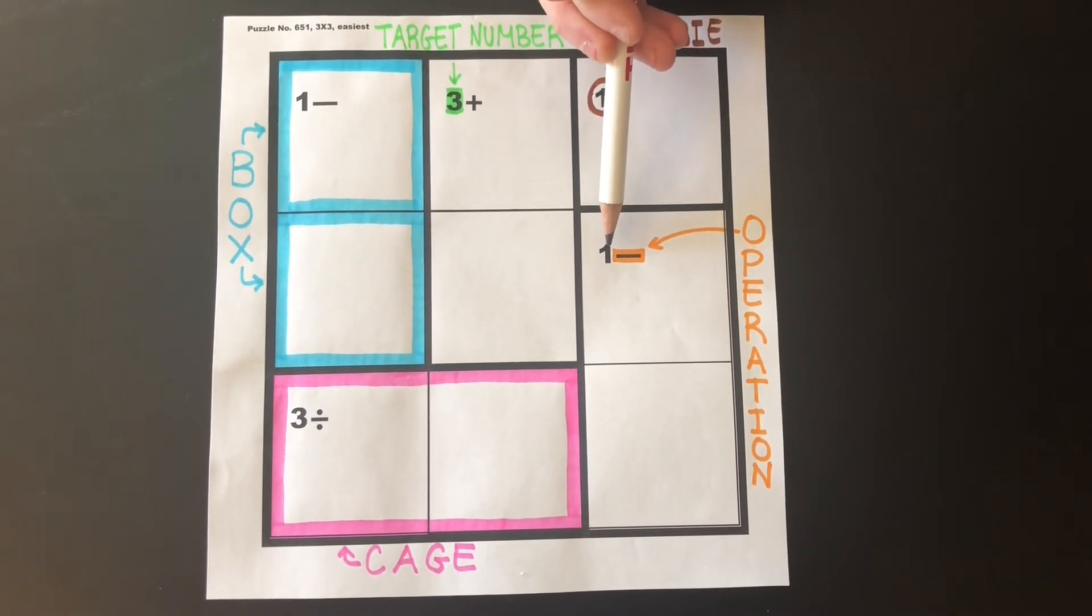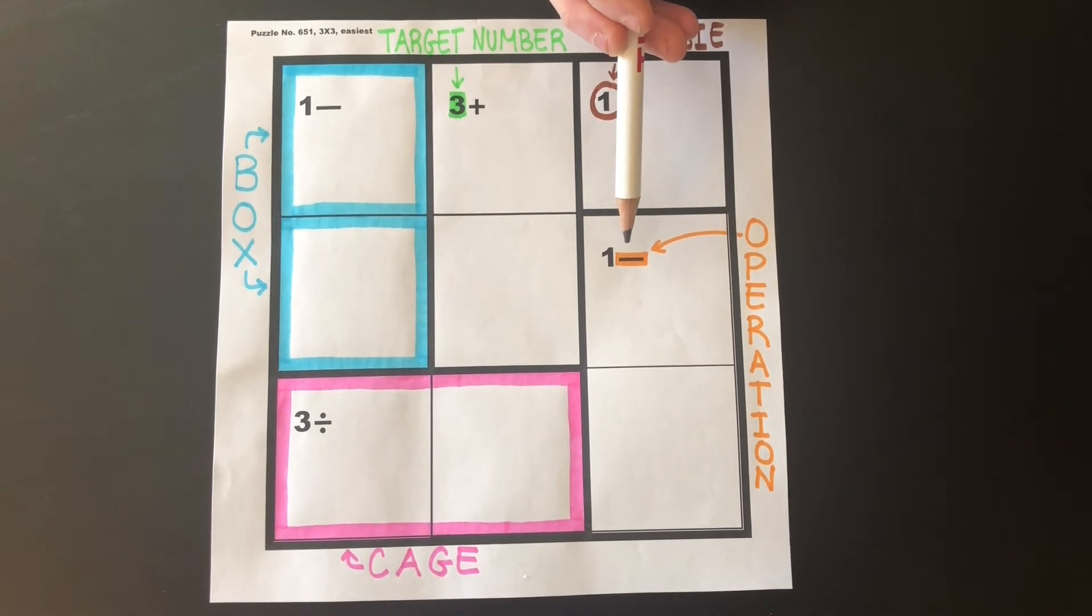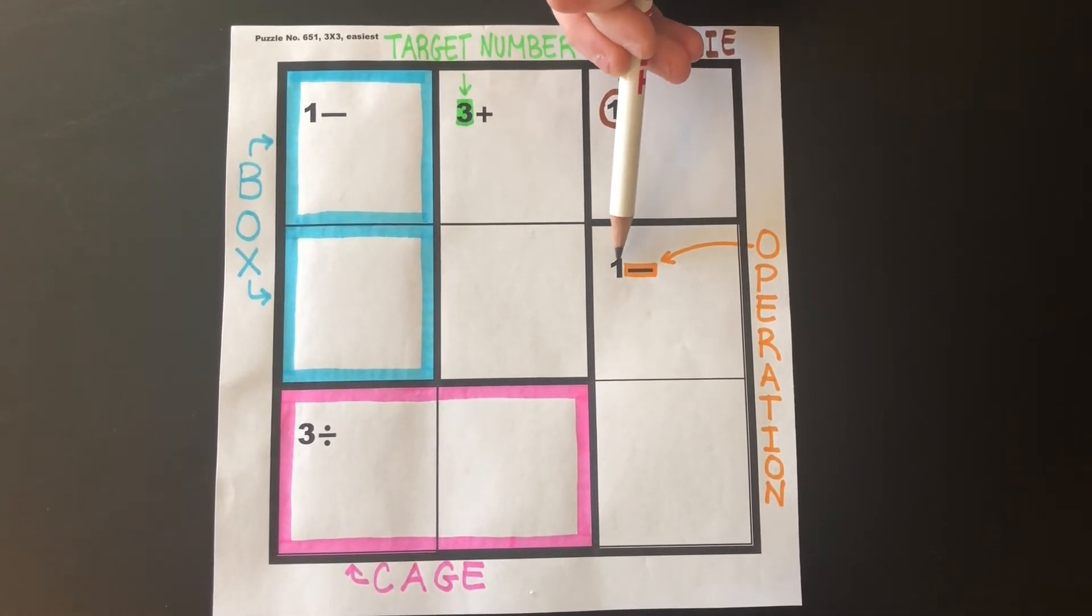For example, one minus is a cage with two numbers that you subtract to equal one.